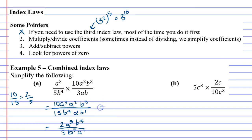Last of all, I've got a to the power of 5 divided by a to the power of 1, which gives me a to the power of 4 — 5 minus 1 is 4. And with the b's, 5 minus 3 is 2, and I'm going to leave my b to the power of 2 at the bottom, because I had a bigger power at the bottom. That one's simplified as much as possible.